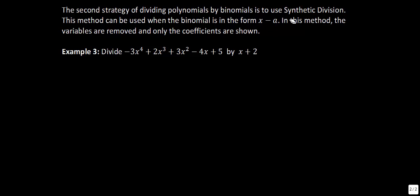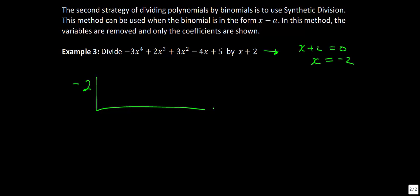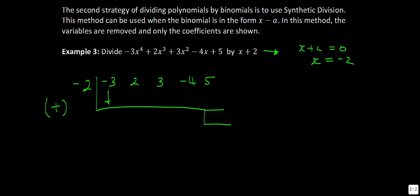When you're doing synthetic division, you take your divisor — x plus 2 — and set it equal to 0. When you do that, you get x equals negative 2. That's the part on the outside of our division statement. Then we take only the leading coefficients: negative 3 for the fourth power, positive 2, then 3, negative 4, and finally 5. The last term is always going to be a remainder, so I like to draw a little box around it. We drop the first term straight down to get negative 3, and then multiply and keep adding through.